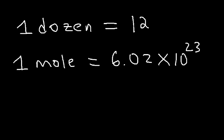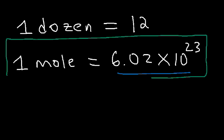Typically, the mole is associated with very small particles like an atom, a molecule, or a formula unit within an ionic compound. This number, 6.02 times 10 to the 23, is also known as Avogadro's number. We use this for conversion problems. For example, if you know the number of moles of carbon atoms, you can calculate the number of carbon atoms. Let's say we have four moles of carbon atoms — how can we convert that to the number of atoms?